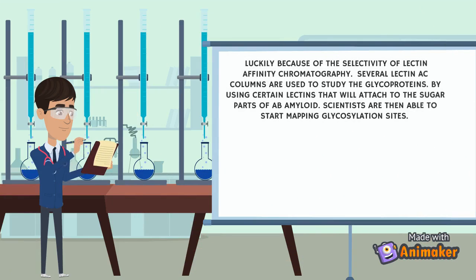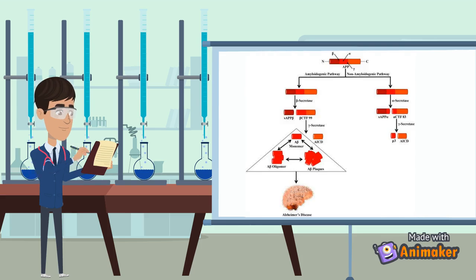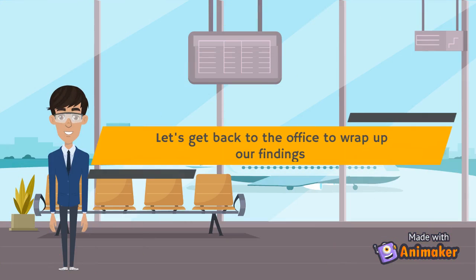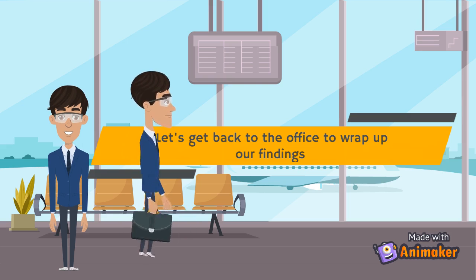Luckily for us, we can use lectin affinity chromatography because of its selectivity. We can use certain lectins to attach to the carbohydrate part of the glycoprotein, fractionate it, and then build up a proteome from it. Because the amyloid precursor protein, which is the building block of our A-beta peptide, is supposed to be cut in certain locations. But for people with Alzheimer's, it is cut at other locations. So if we can study it and understand where the cut is occurring and why it is occurring, we can then use it to try and find a treatment for it. And now that we understand why it's hard to study it and how lectin affinity chromatography can help us, let's head back to the office and wrap this topic up.